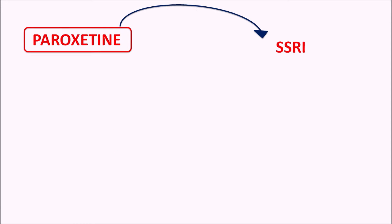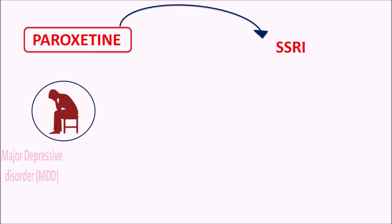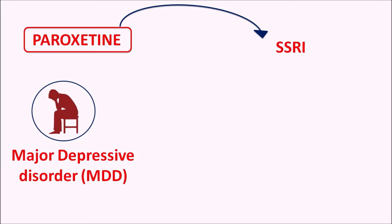Paroxetine can be used in the treatment of major depressive disorder where the patient is associated with symptoms such as irritability, insomnia, pessimism, feeling of guilt, and social withdrawal. In such conditions, paroxetine can be given to manage the depressive symptoms.